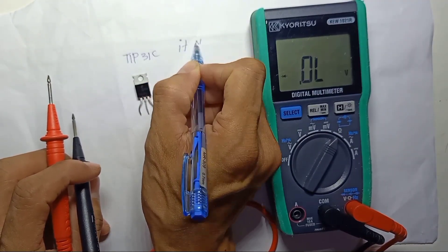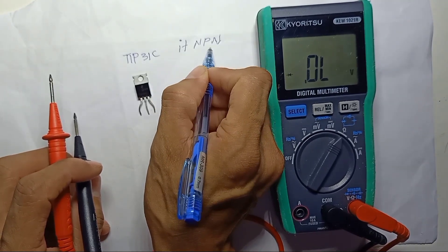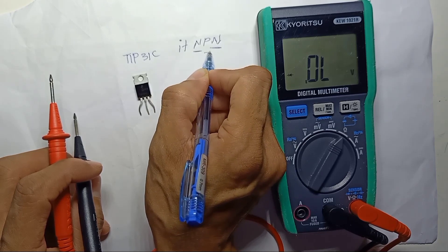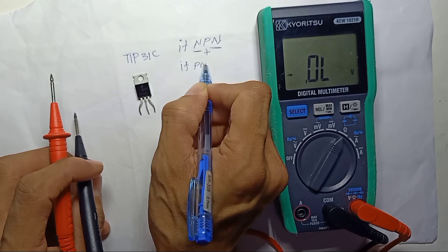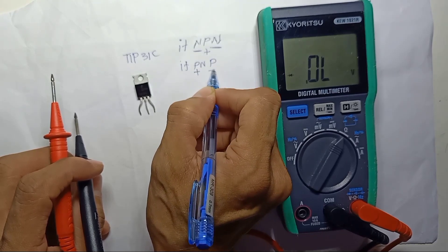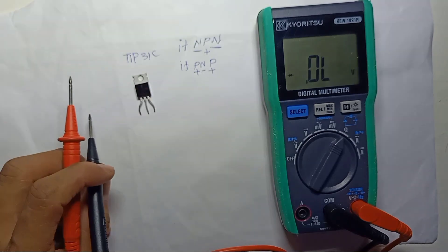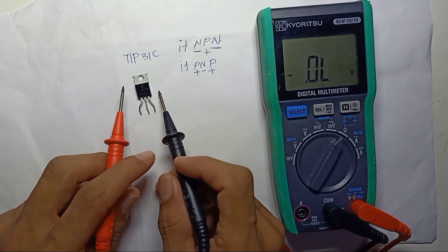If NPN, 2 is N, 1 is P. If PNP, 2 is P, 1 is N. So we don't know if this transistor is NPN or PNP.